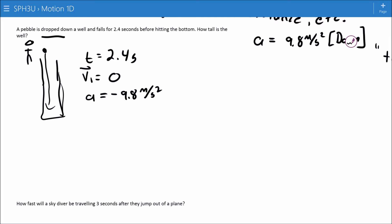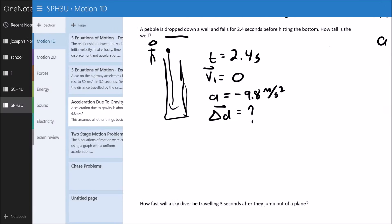Well, really what we're asking is, what was the displacement of the stone as it fell into the well? So there we go. We have three. We can find the fourth.